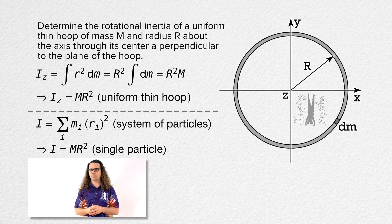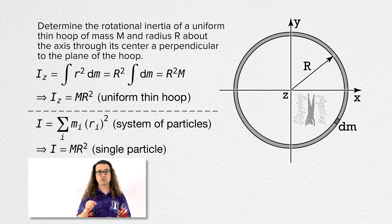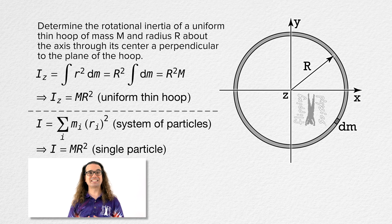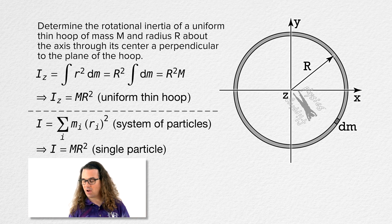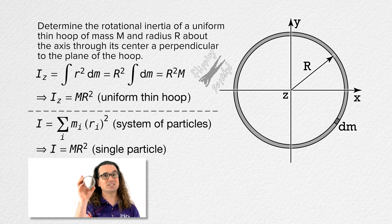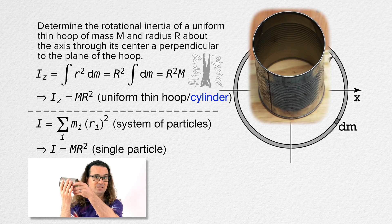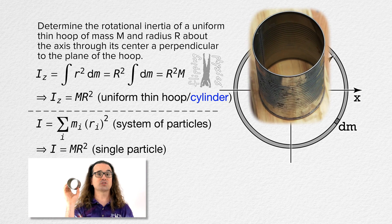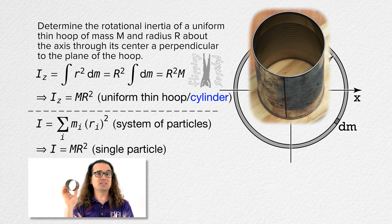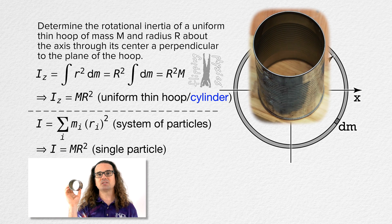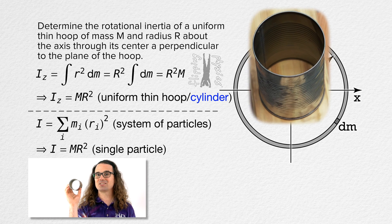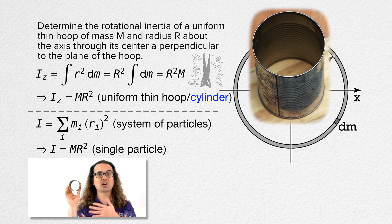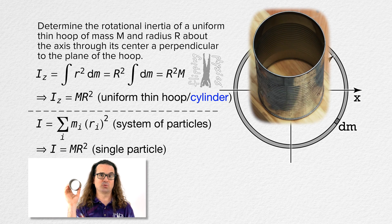There are several things I would like you to notice about this. One is that the length of the uniform thin ring in the z direction is not in these calculations. In other words, the moment of inertia of a uniform thin cylinder about the same axis is also equal to the total mass of the cylinder times the radius of the cylinder squared. This again makes sense because all of the mass of the cylinder is still located a distance of the radius of the cylinder away from the axis of rotation.